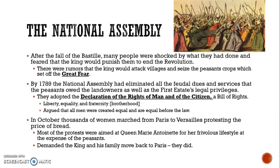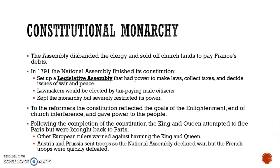In October, thousands of women marched from Paris to Versailles protesting the price of bread. Most protests were aimed at Queen Marie Antoinette for her frivolous lifestyle at the expense of the peasants. They demanded the king and his family move back to Paris, which they eventually did, as the king was seen as too far removed from the people at Versailles. The assembly disbanded the clergy and started selling off church lands to pay France's debt. In 1791, the National Assembly finished its constitution, setting up a legislative assembly with power to make laws, collect taxes, and decide issues of war and peace, elected by taxpaying male citizens, keeping the monarchy but severely restricting its power.